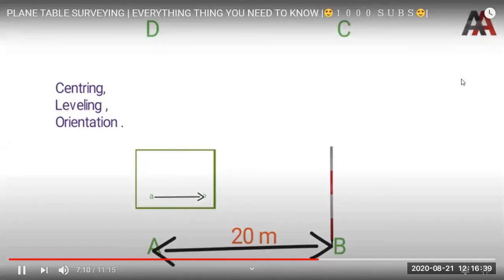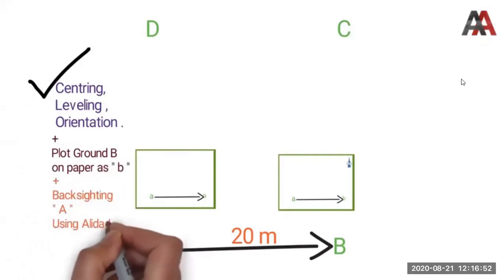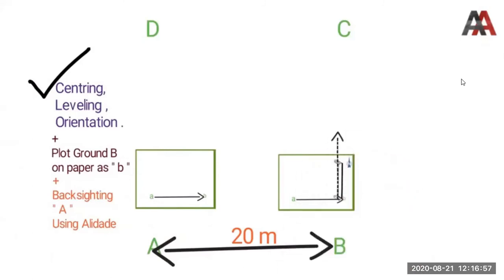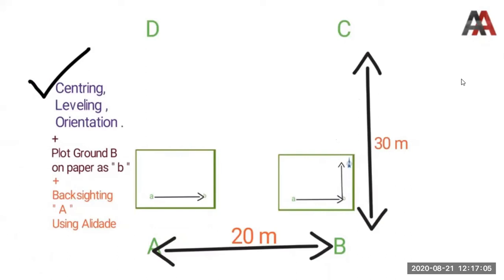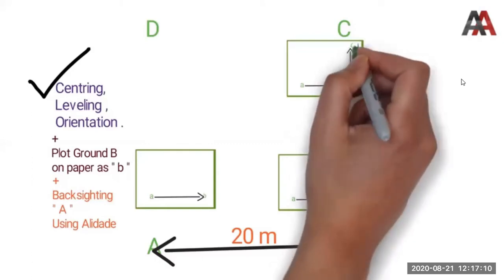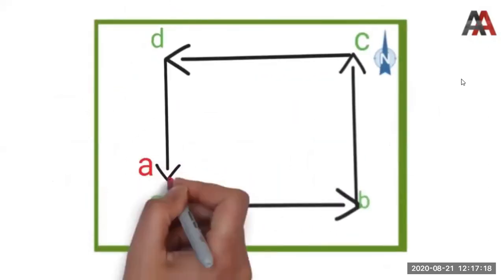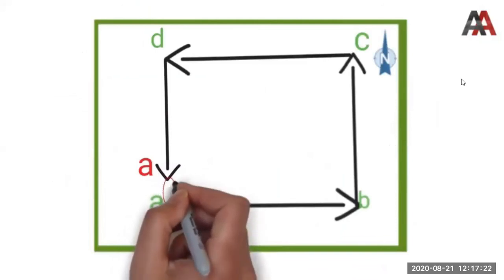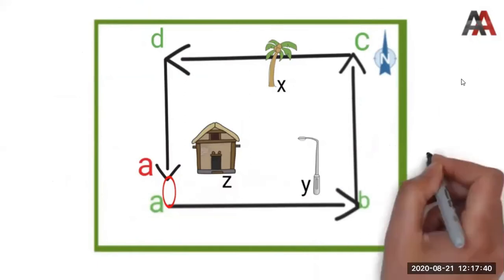After that, I shift the table to station B, level, center, and orient. I plot point B on paper, then back-sight to A using the alidade. Once back-sighting is complete, I sight forward to C, measure the ground distance BC, use a suitable scale, and draw the line on paper. I continue this same procedure through all stations and finally return to A. There will be some closing error, which we correct by applying Bowditch's rule. With this, the traversing method is finished.